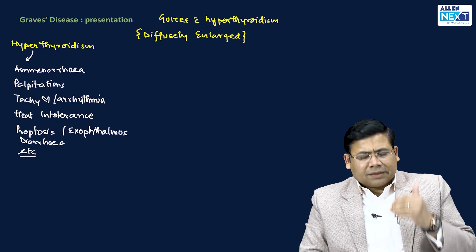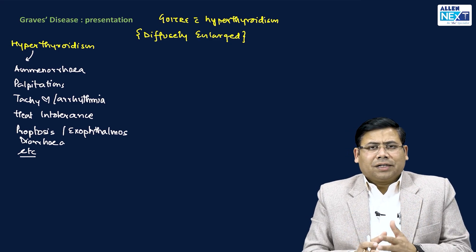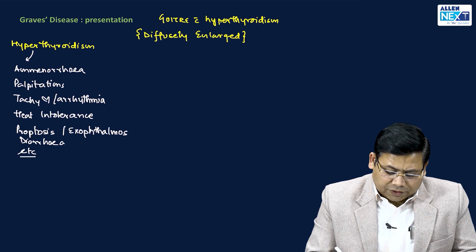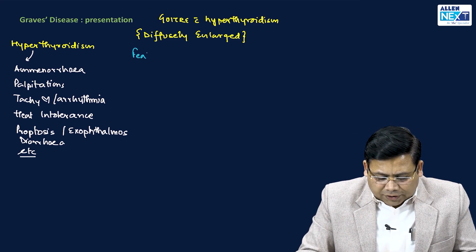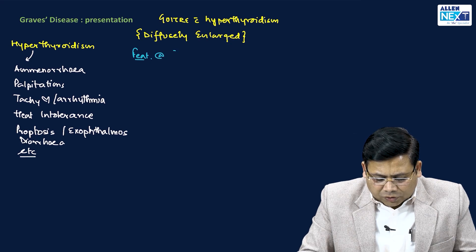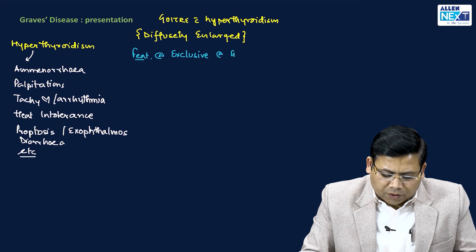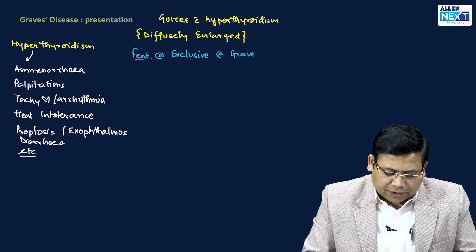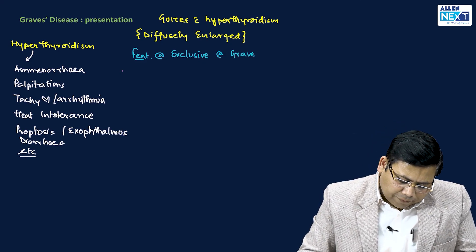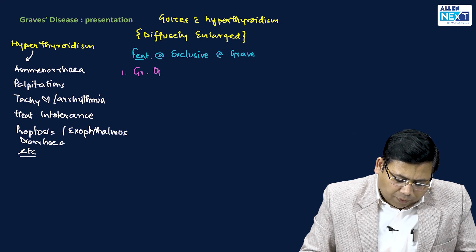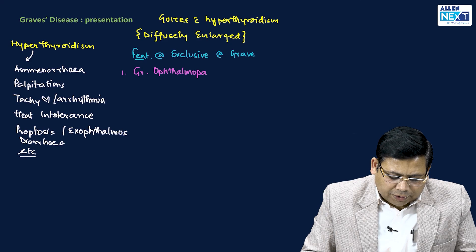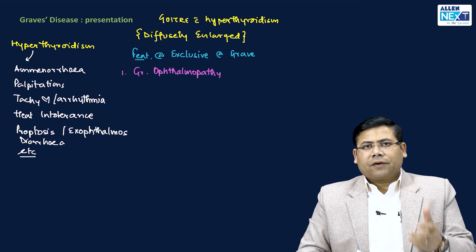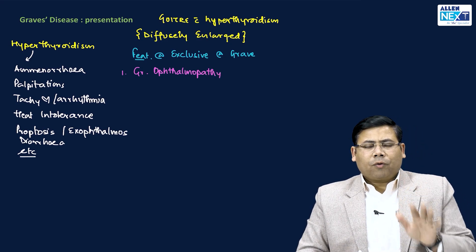Apart from these, there are certain important features which are exclusive to Graves disease. The first exclusive feature is Graves ophthalmopathy, which has four important findings to understand.